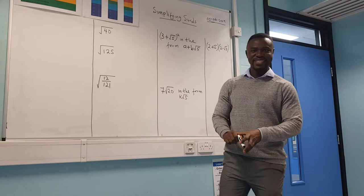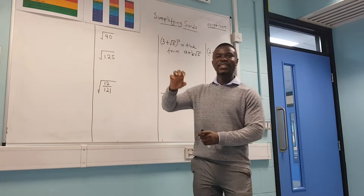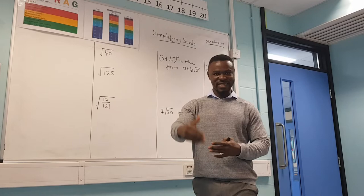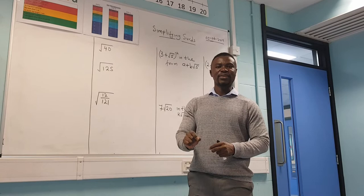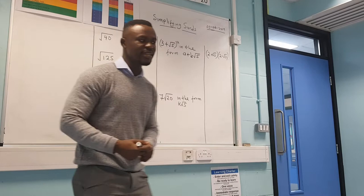Today we'll be looking at what we call simplifying surds. A surd means any number that has a square root on it — any number inside the square root sign is called a surd. A surd is usually for numbers that we cannot simplify, so when you can't have the exact answer and we leave it in the square root sign, we call it a surd. The purpose of a surd is that we want to use the accurate answer rather than an estimate, so we leave the numbers in surd form.